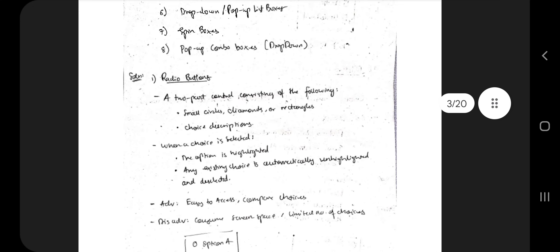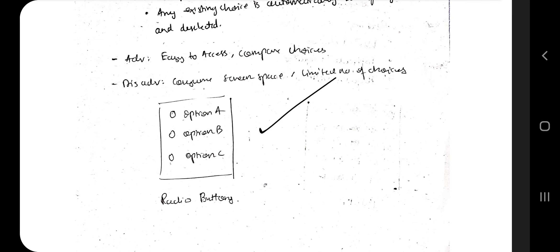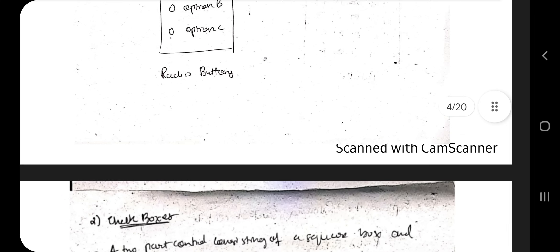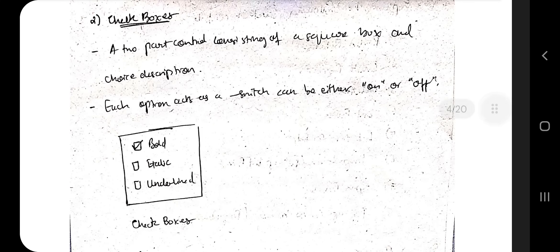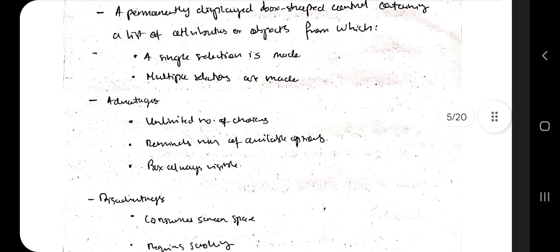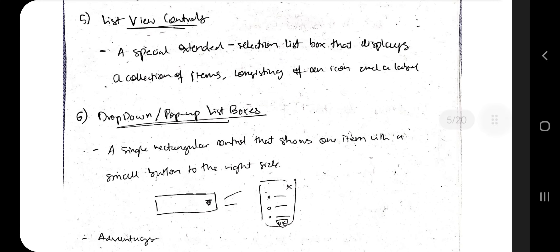A radio button is a two-part control consisting of small circles and choice descriptions; when a choice is selected, the option is highlighted. Checkboxes can be toggled on and off. Palettes show colors for selection. List boxes allow unlimited choices with single or multiple selection. List view controls show items with icons or labels — they are technically similar to list boxes but with minor differences.